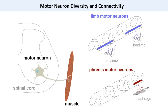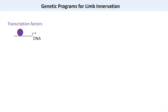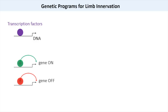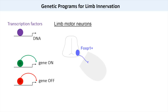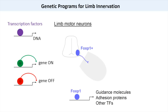These distinct motor neuron types are generated through genetic programs that act during early embryonic development. Most cell types, including motor neurons, are specified through the actions of proteins called transcription factors. Transcription factors act as molecular switches by binding to DNA and turning genes on or off. In land vertebrates, the generation of limb motor neurons requires the actions of a transcription factor called FOXP1. FOXP1 regulates a large number of genes important for motor neuron development, including guidance molecules, adhesion proteins, and other transcription factors.